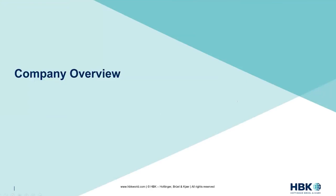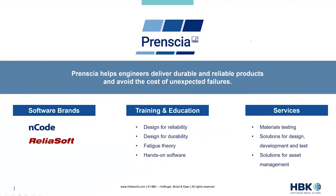Before we start, I'm going to give you a quick company overview for those not familiar with HBK and Prencier, just to give you an idea of who we are. Prencier is one of the software divisions of HBK. HBK consists of B&K — the noise and vibration shaker table people — and HBM, who do instrumentation and sensors. Prencier is the software side of the business, and the goal is to help engineers deliver durable and reliable products and avoid the cost of unexpected failures.